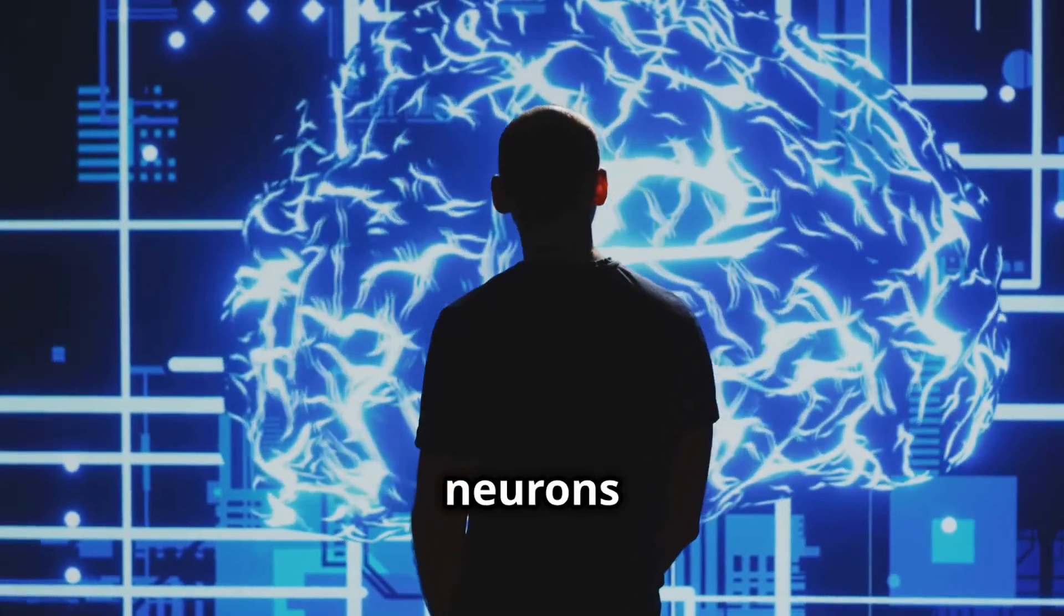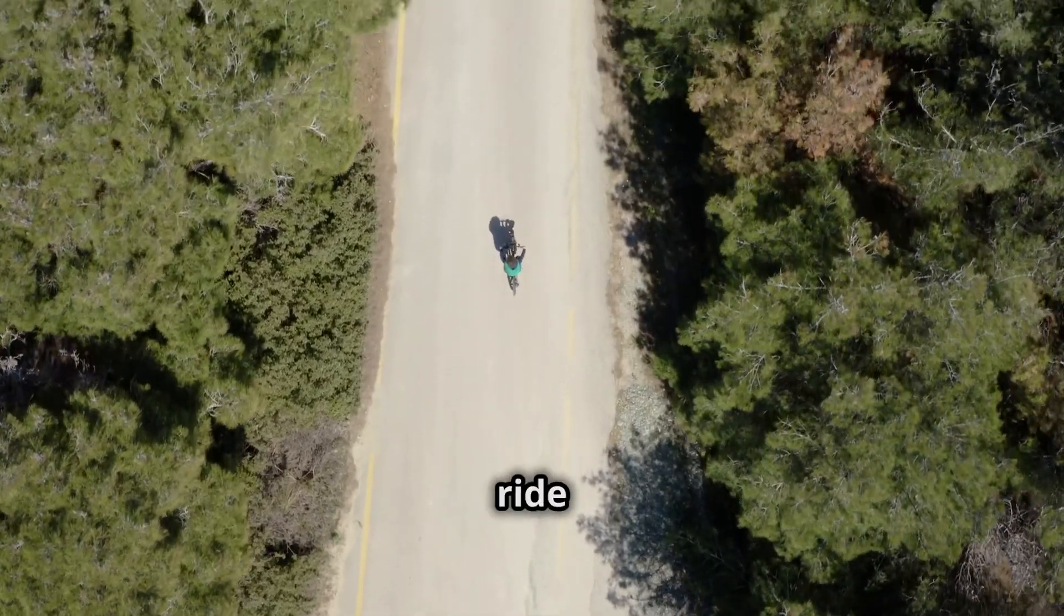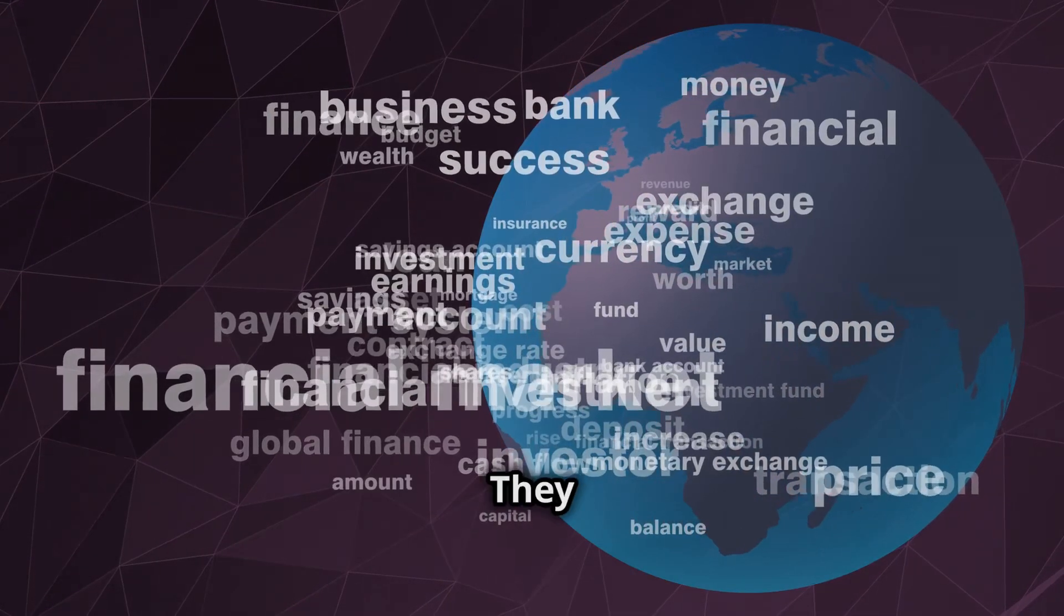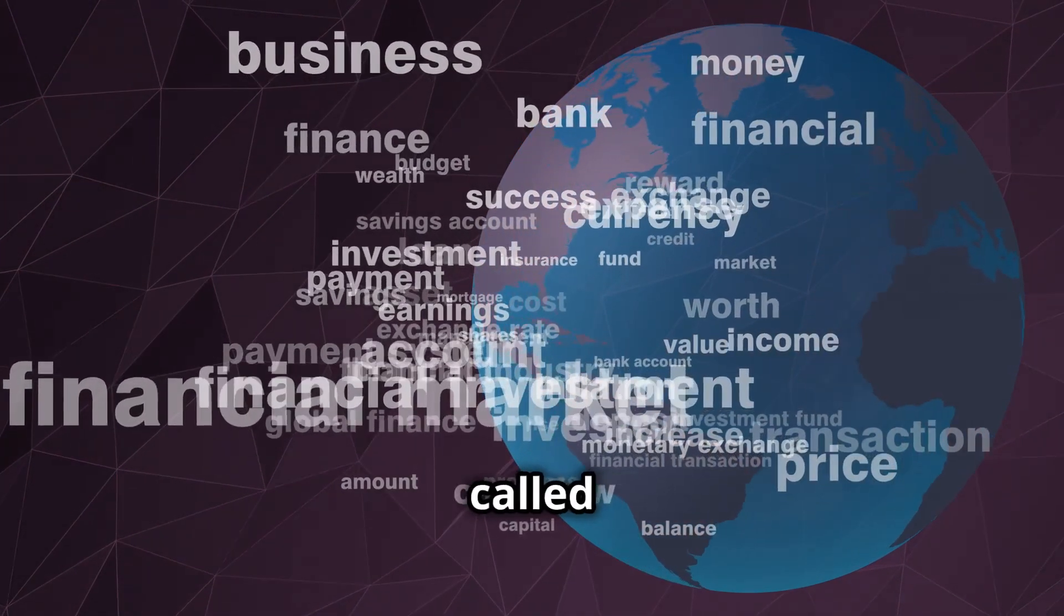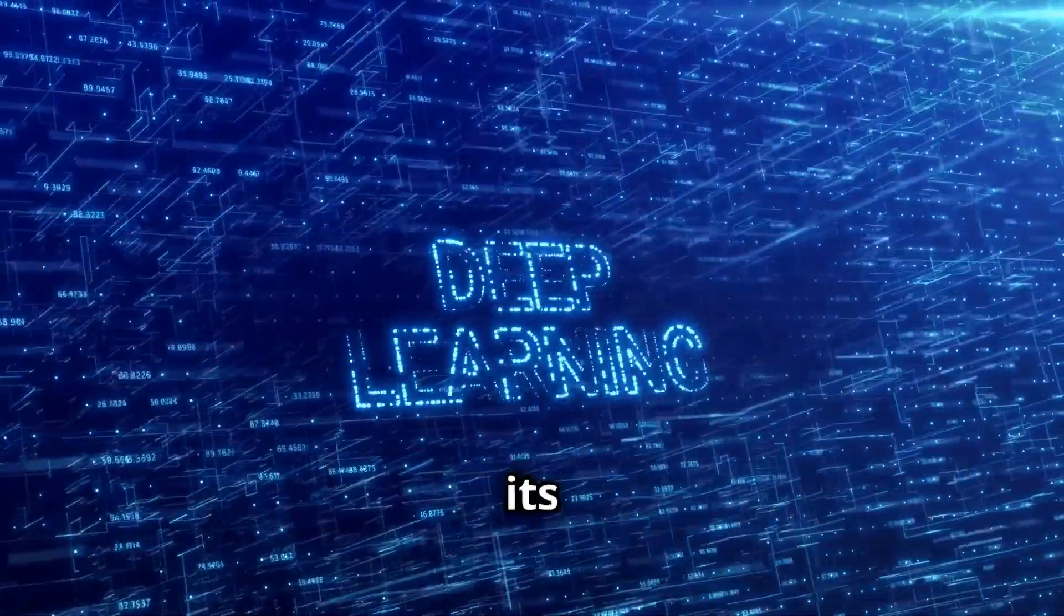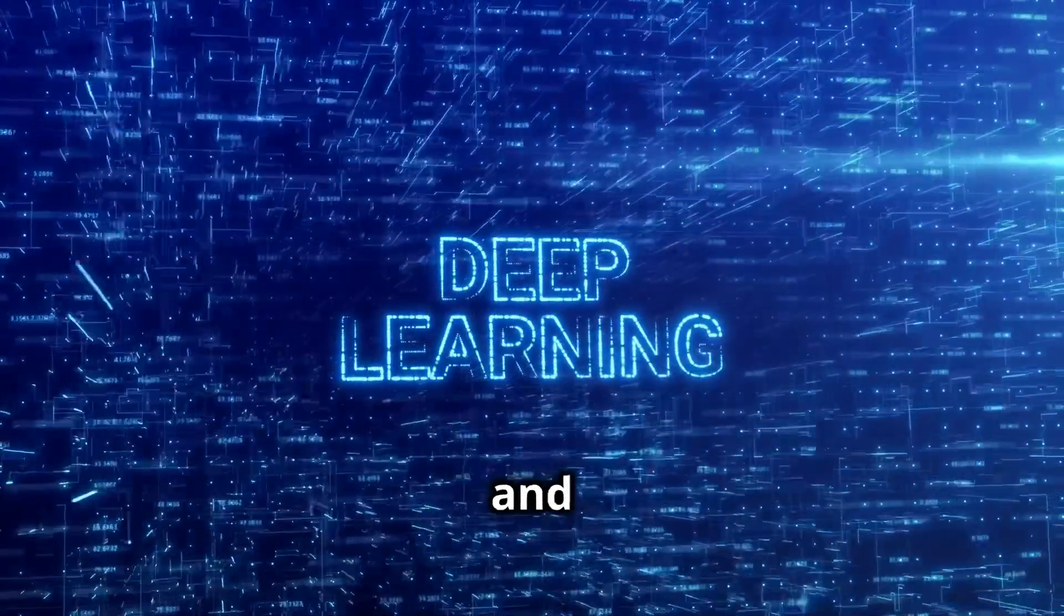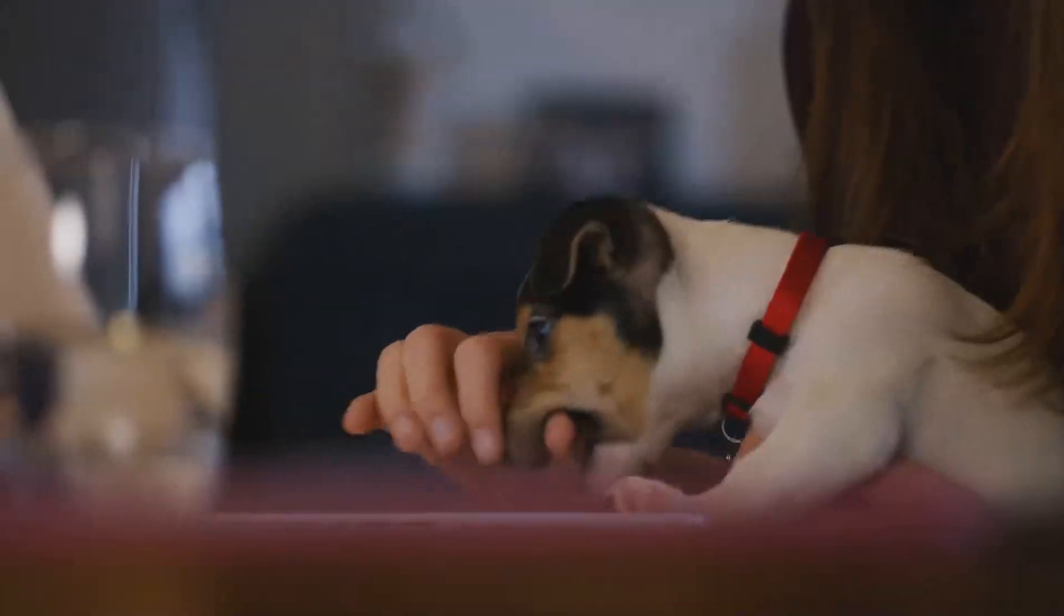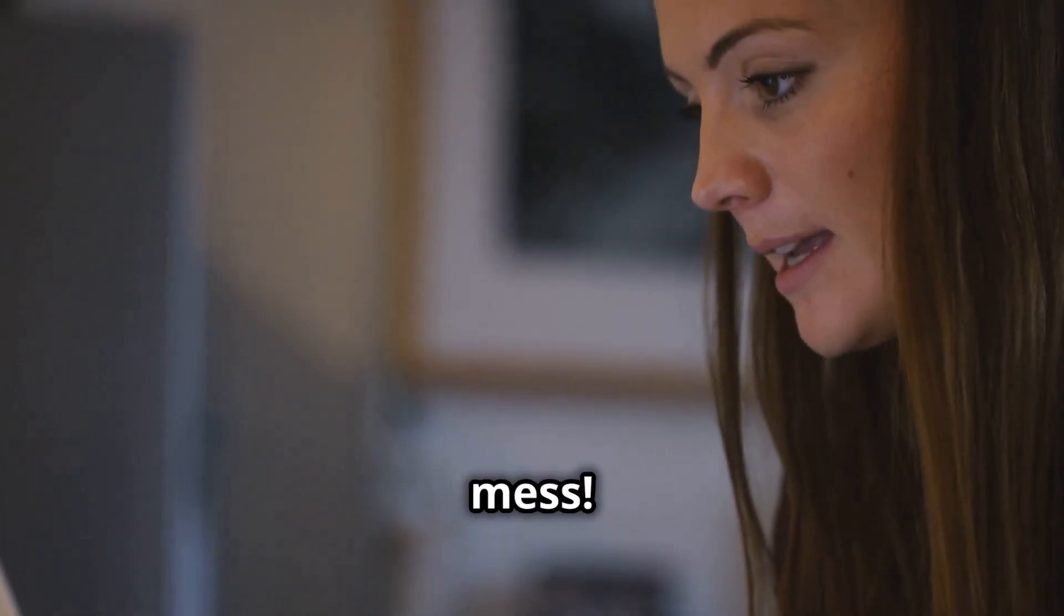Now, how do these neurons know what to do? They learn, just like you learn to ride a bike. They get better with practice, thanks to something called training. During training, the network adjusts its connections based on the data it sees, getting smarter and more accurate over time. It's like training a puppy, but with less mess.